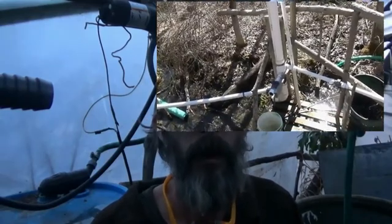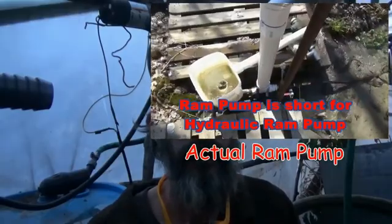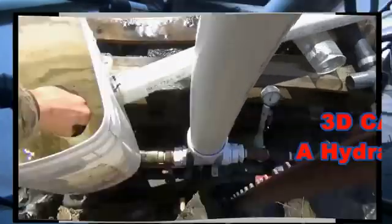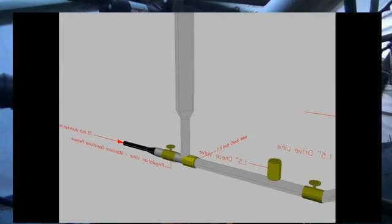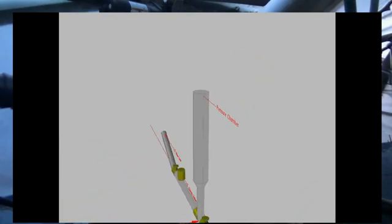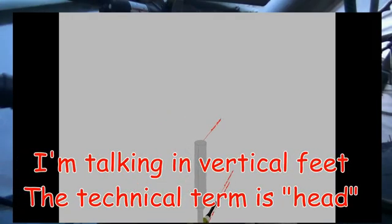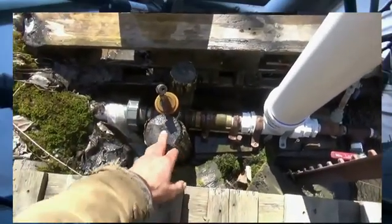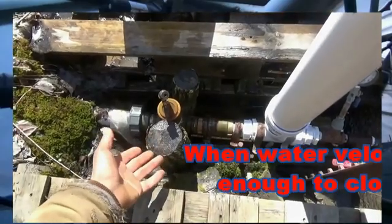A ram pump is a hydraulically operated pump. It uses a portion of the water that is falling from a water source to drive pressure in the pump. Some of that energy is transferred to build pressure in the pressure chamber, which delivers a small portion of the water to your destination. A ram pump will typically pump about ten times the fall distance, and usually delivers around ten to fifteen percent of the total volume throughput.